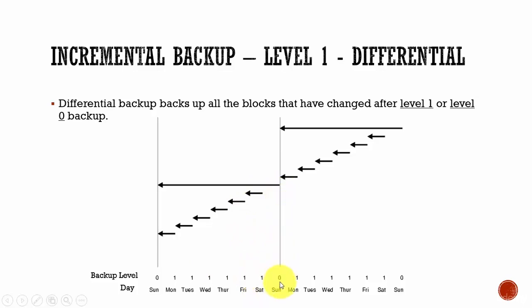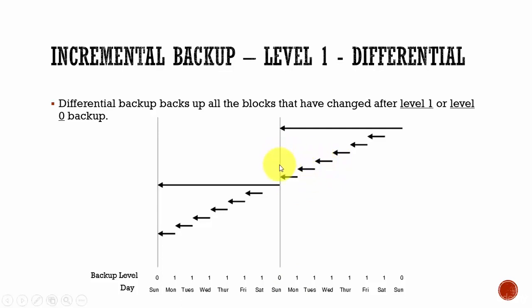Once a level 0 backup happens on a Sunday, it will take the full backup of all the data blocks that have data. And again from Monday, the differential incremental backup starts. That means the differential incremental backup will backup all the blocks that have been changed since the last level 0 or level 1 backup.